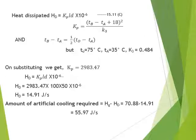To find KP, substitute into KP = (TB − TA + 18)² / K3, which is also available in the data handbook.